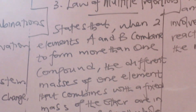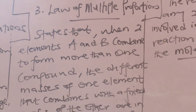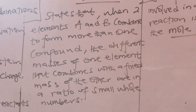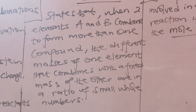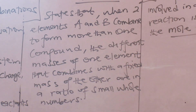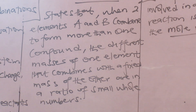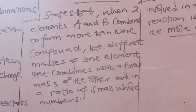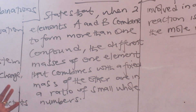The law of multiple proportions says that when two elements A and B combine to form more than one compound, the different masses of one element that combines with the fixed mass of the other are in a ratio of small whole numbers. It means the compounds or atoms are not in fractions — they are in whole numbers. That is why when we are doing a molecular formula where we have something like 1.49, we have to multiply through by a constant to make them whole.